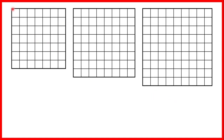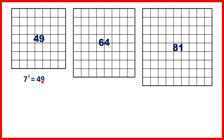Now we have seven times seven, so forty-nine squares — forty-nine is our next square number. Here we have sixty-four squares because eight times eight is sixty-four. And here we have eighty-one squares because nine times nine is eighty-one. So seven squared is forty-nine, eight squared is sixty-four, and nine squared is eighty-one.